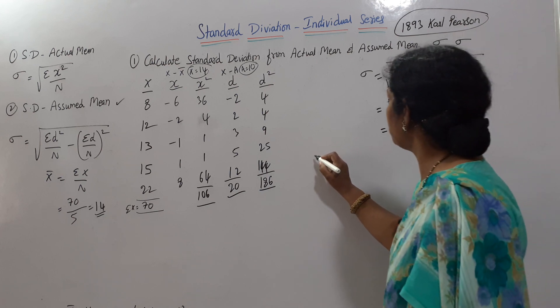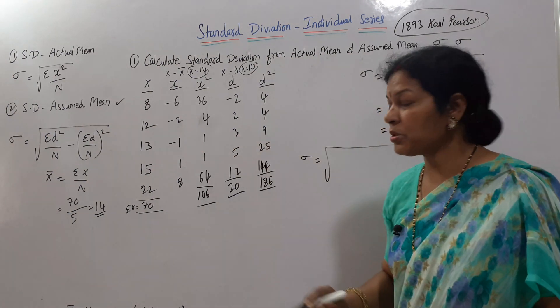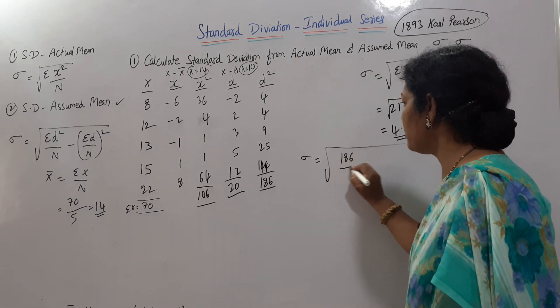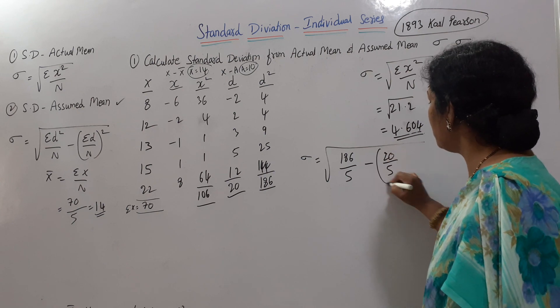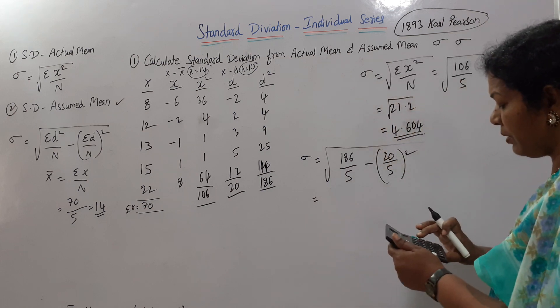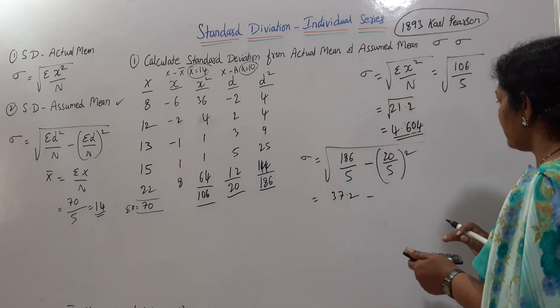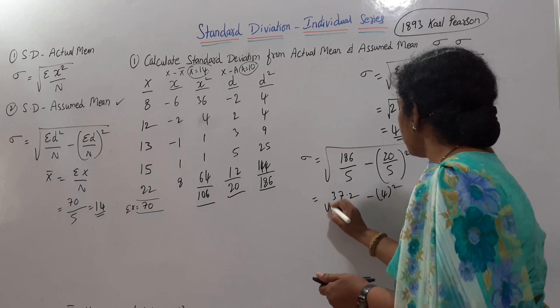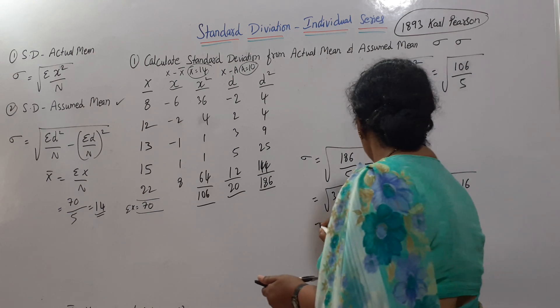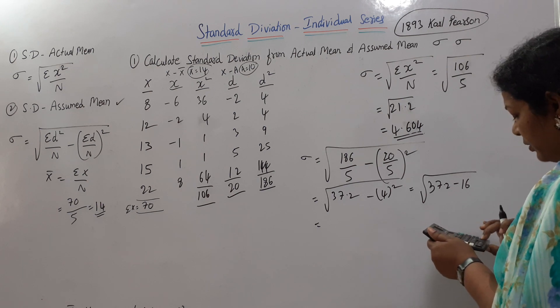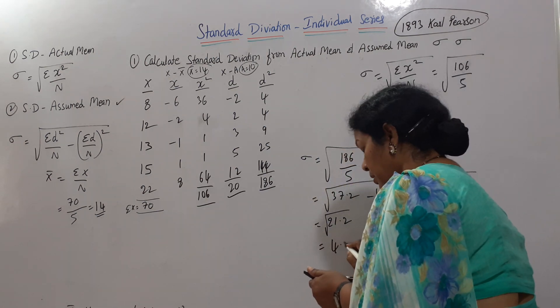The formula is σ = √(Σd²/n - (Σd/n)²). d square is 186, so 186 by 5. n is 5. Minus sigma d, which is 20, so 20 by 5, whole square. 186 divided by 5 = 37.2 minus 20 by 5 squared. You can take it as 37.2 minus 16, because 4 squared is 16. So it comes to 21.2. If you remove the root, we get 4.604 - same answer.